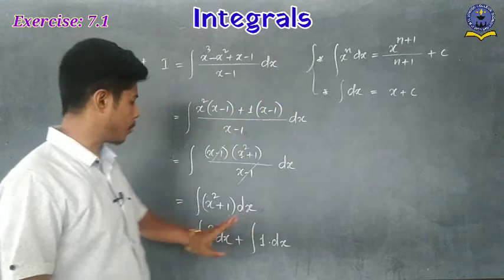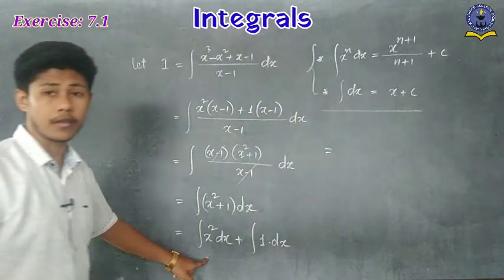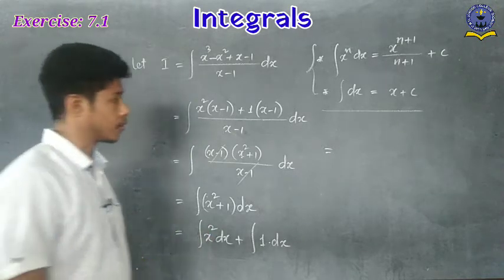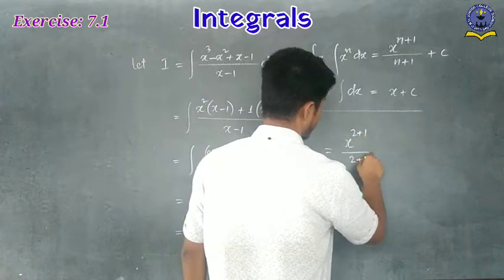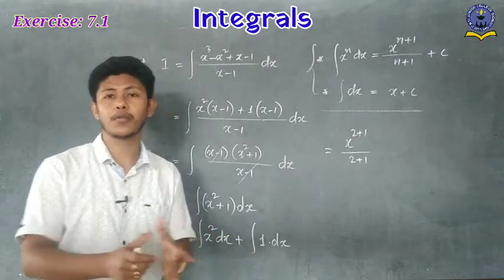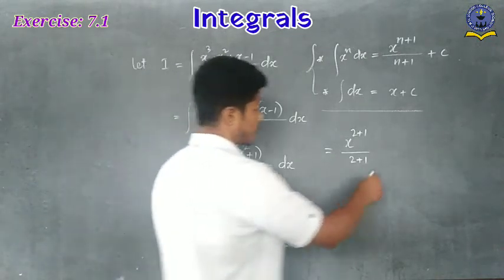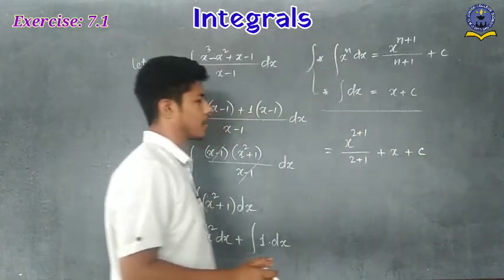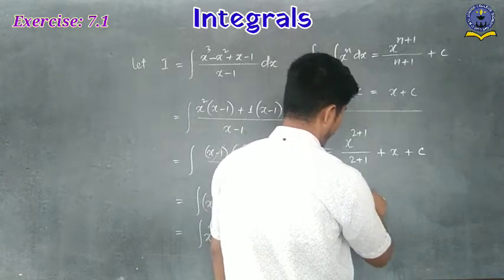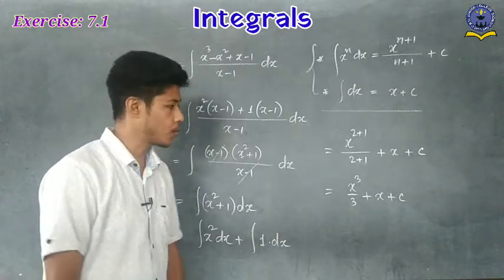Applying the formula with n = 2: ∫x² dx = x²⁺¹/(2+1) = x³/3. The sum of two integrating constants is again a constant, so we write one constant C. The final answer for Question 13 is x³/3 + x + C, where C is an integrating constant.